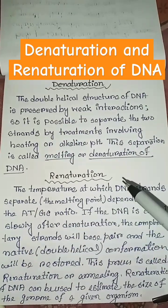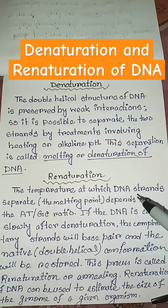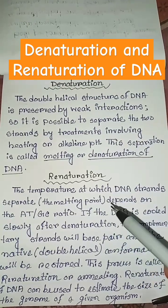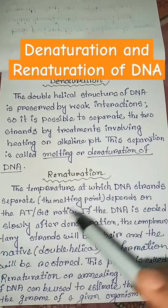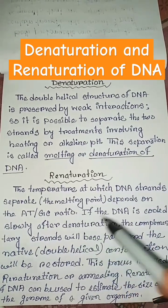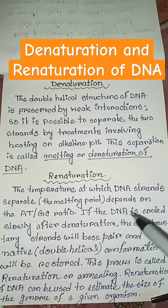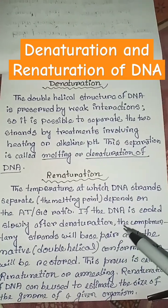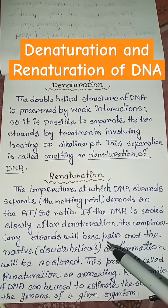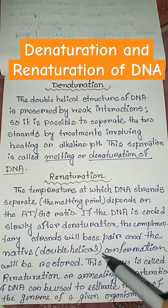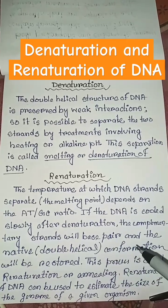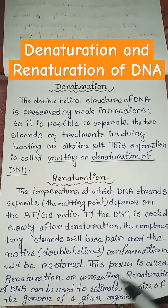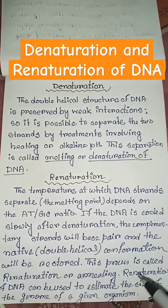What is renaturation? The temperature at which DNA strands separate, that is the melting point, depends on the AT/GC ratio. If the DNA is cooled slowly after denaturation, the complementary strands will re-pair and the native double helical conformation will be restored. This process is called renaturation or annealing.